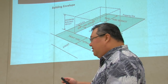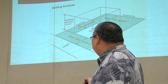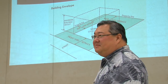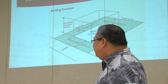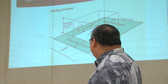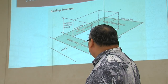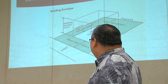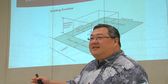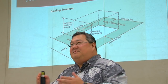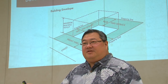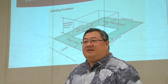Those things combined give you what we call a building envelope. As you can see here, here are your front and your rear setbacks, your side setbacks, your maximum height, and that basically provides the envelope within which most of your structures have to be.